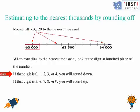Now let's look at the rules. If that particular digit which is sitting at the hundreds place is 0, 1, 2, 3 or 4, we need to round down.